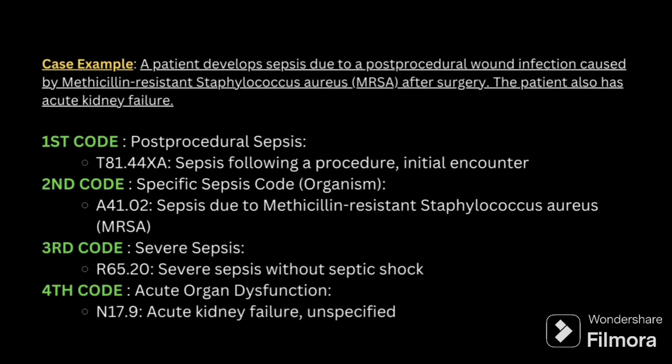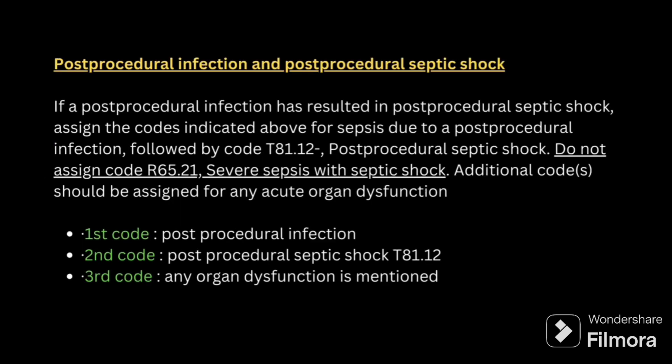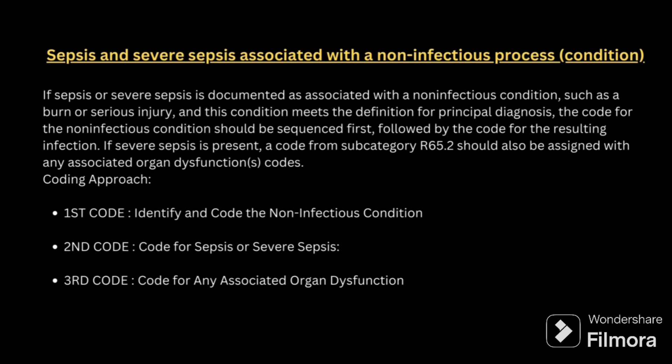Example: A patient develops sepsis due to post-procedural wound infection caused by MRSA after surgery, and the patient is also having kidney failure. First code: post-procedural sepsis T81.44. Second code: sepsis due to MRSA A41.02. Third code: severe sepsis without septic shock R65.20. Finally, code for organ dysfunction. Next: post-procedural infection and post-procedural septic shock — if 'and' is present between two conditions, code them separately. First code for post-procedural infection, second for post-procedural septic shock, third for organ dysfunction if present.